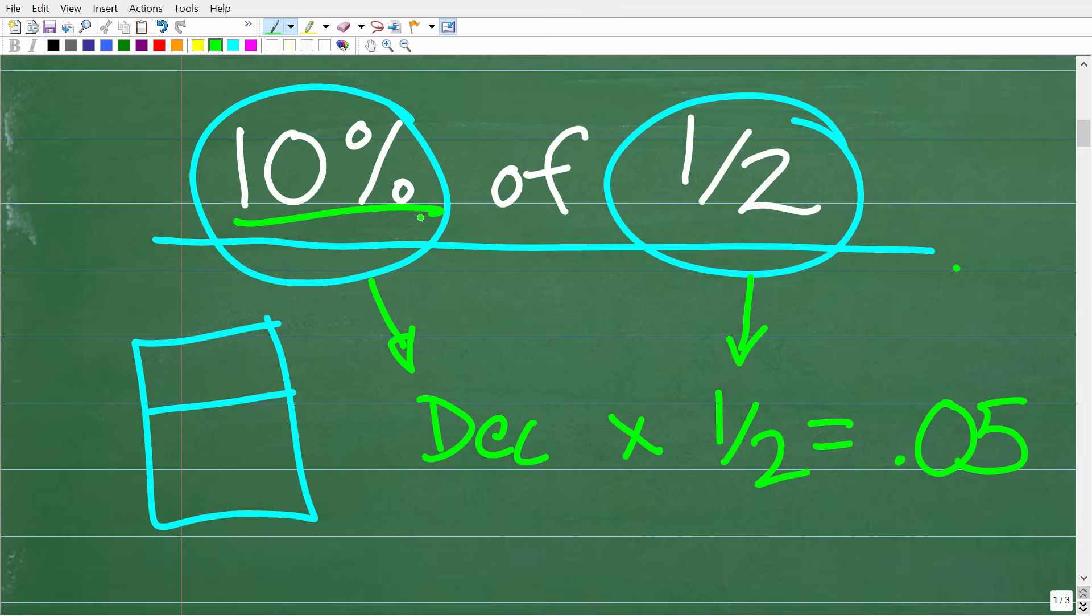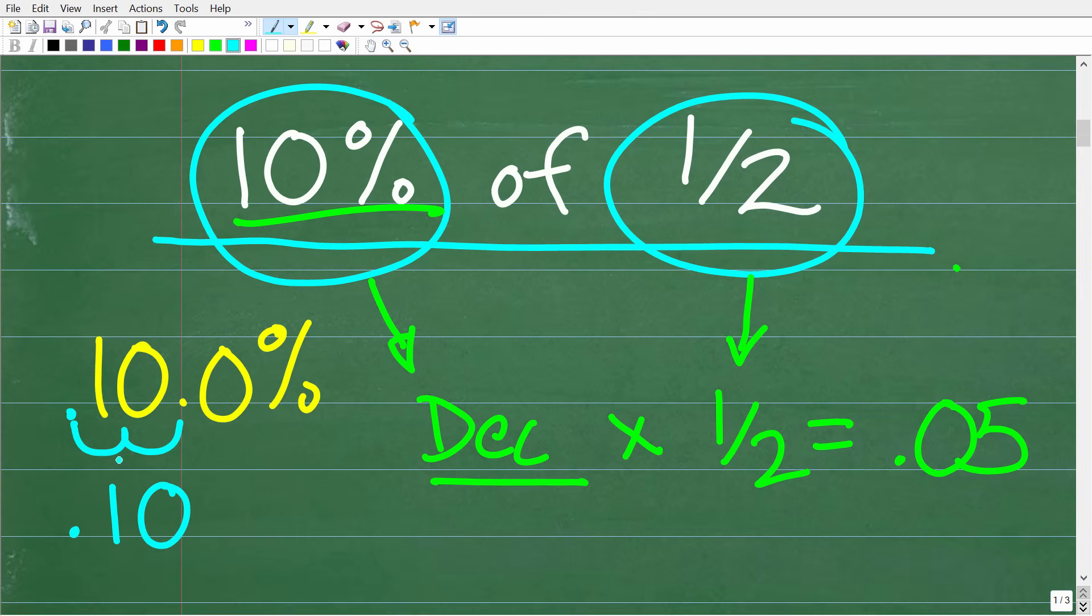So we have to change this percent into a decimal. So how do we change a percent into a decimal? Well, it's actually very easy. So here is 10 or 10.0 percent. So typically what most people do to change a percent into a decimal is simply they move the decimal point over two places to the left. So 10 percent is equivalent to 0.1 or 0.10. So again, 10 percent is the same thing as the decimal 0.10.